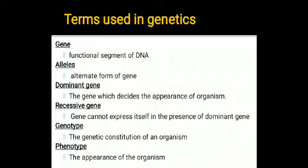The next term is the dominant gene. The dominant gene is the gene which decides the appearance of the organism. For example, there is a tall plant and a dwarf plant. The tall plant is the dominant character. The dominant character is always capitalized — for example, T for tallness. If it is dwarfness, it is small t. The recessive gene cannot express itself in the presence of the dominant gene.